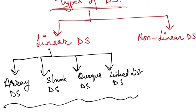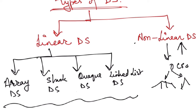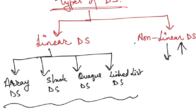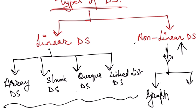Now let's talk about non-linear data structures. Unlike linear ones, elements here are not in sequence — instead they are arranged in a hierarchical manner, like a CEO at the top followed by managers and their teams. The two most important non-linear data structures are Graph and Tree.